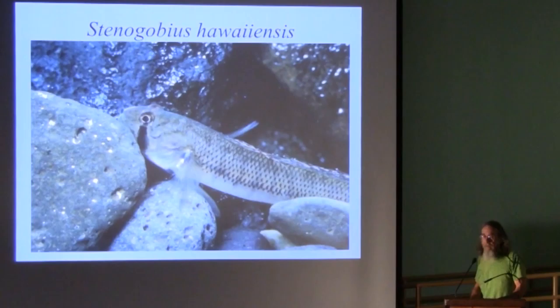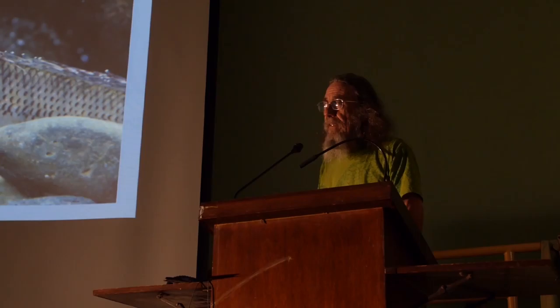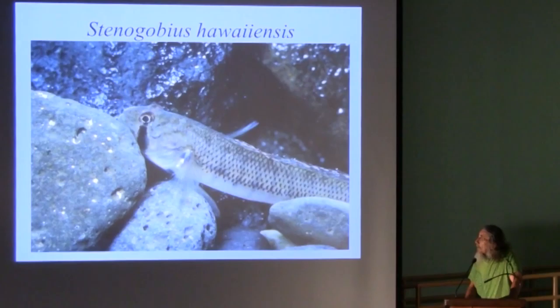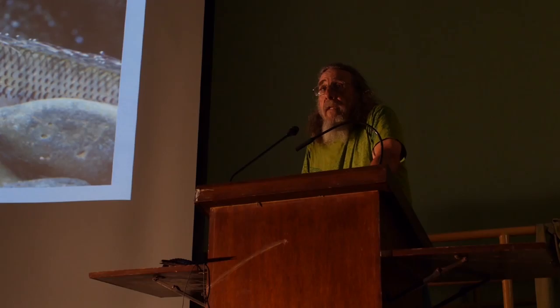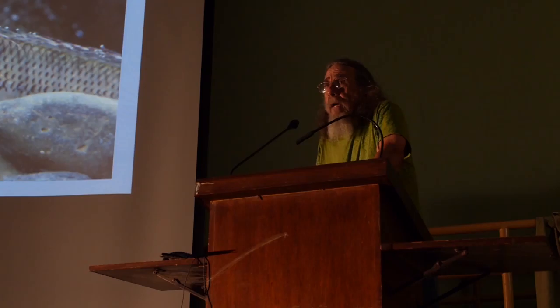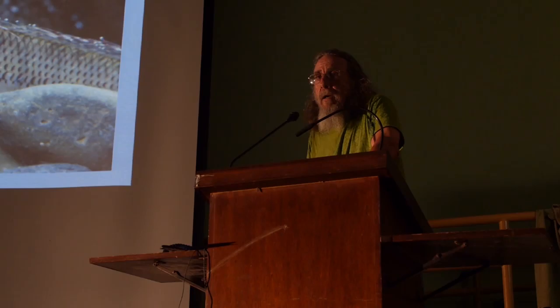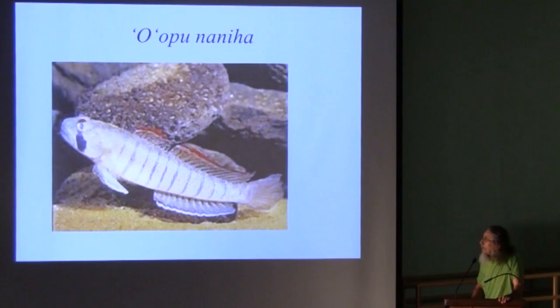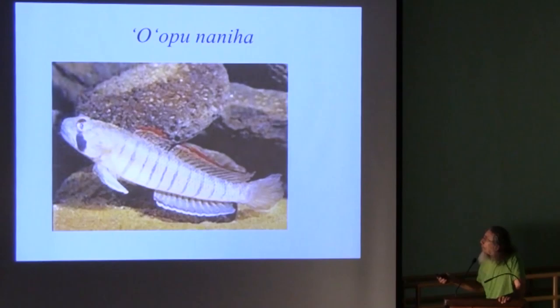The next species moving upstream is Stenogobius. This is actually very common in Oahu streams but not that common on other islands. You can see the little suction disc it has is kind of filmy — not very strong — so this fish also doesn't get very far upstream. It likes sandy bottoms and buries itself in the sand. If you go to a stream mouth at Kahana or Ka'awa, these fish are very common under the highway bridges crossing the stream. When you put them in an aquarium, they bury themselves in the sand so you can't really get a look at them.